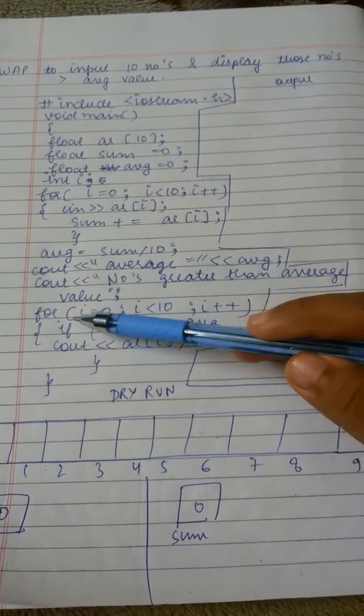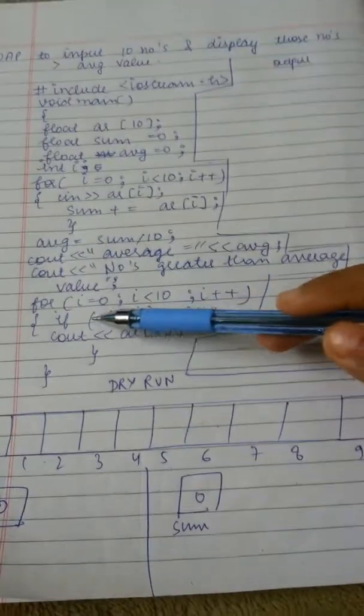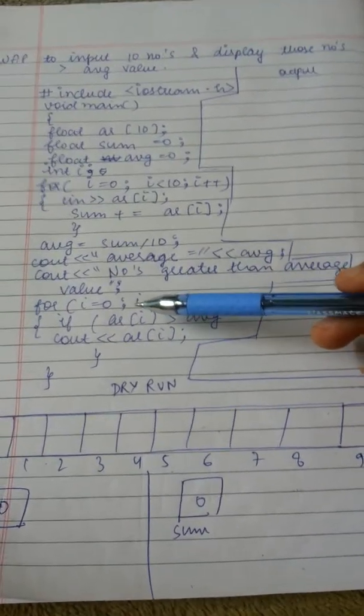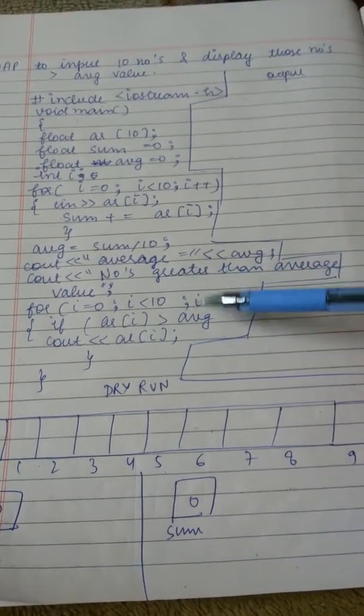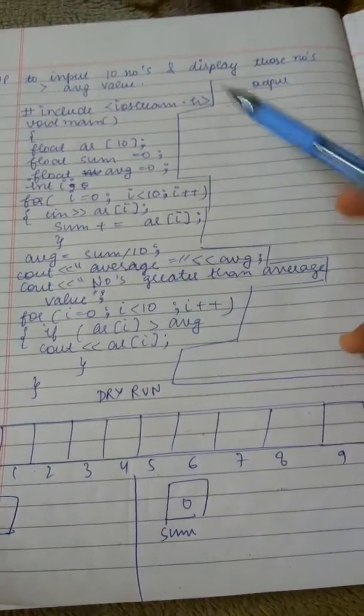Now we have used an if statement: if ar[i] is greater than average. This means if the entered number is greater than the value of average, then it will display the number itself.